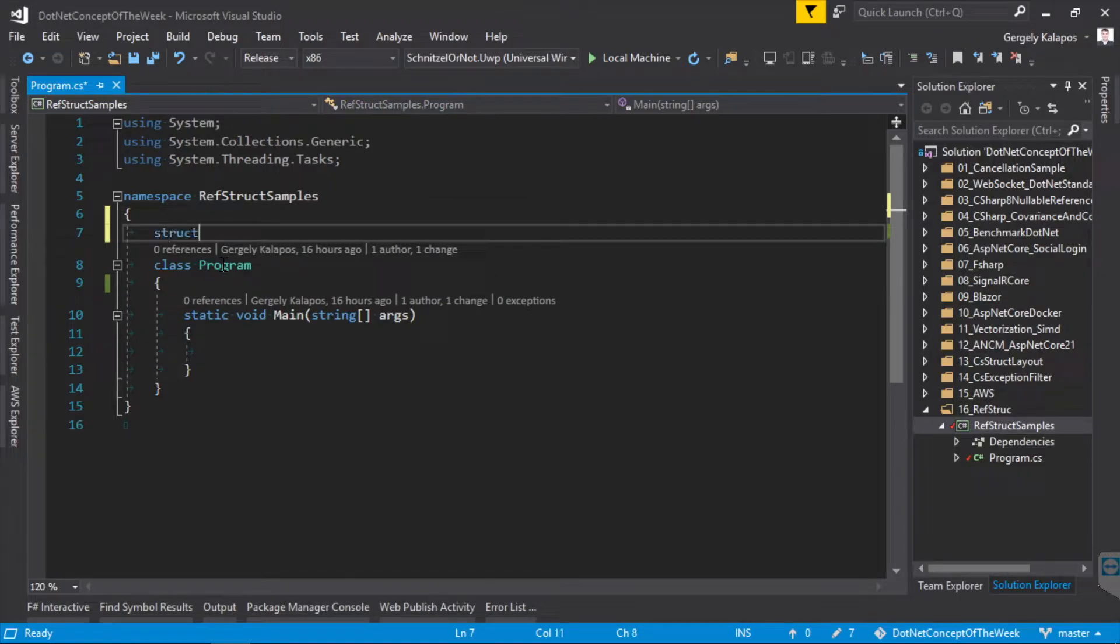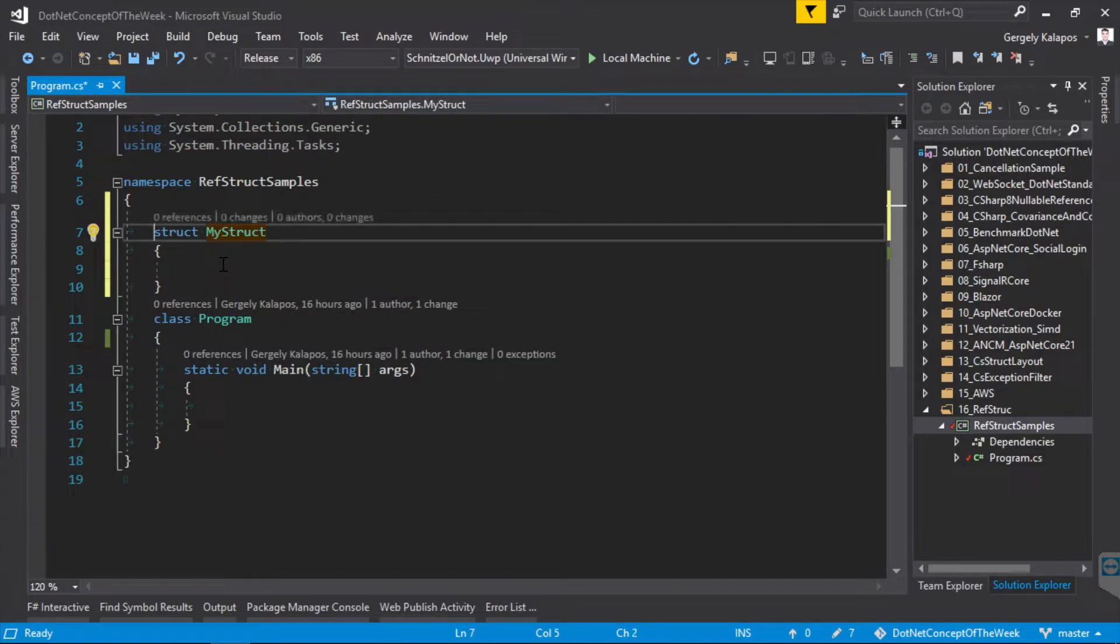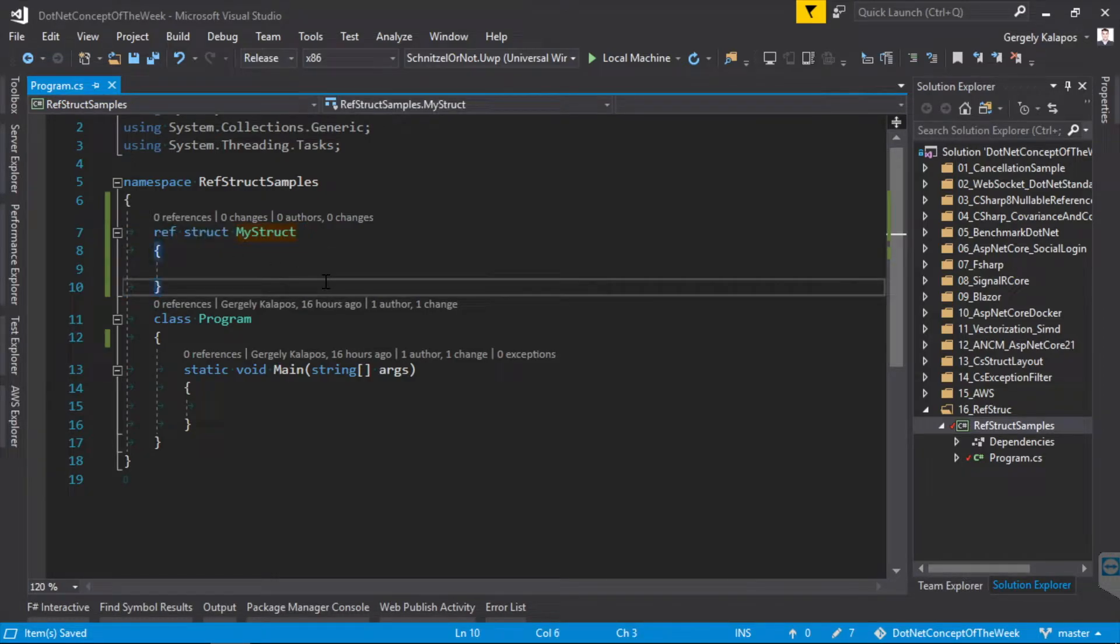With this I can go back to my C# file and create a struct, then I can add the ref keyword to it. Basically that's it, this is what the syntax looks like. In the remaining part of the video we will talk about what this exactly means.